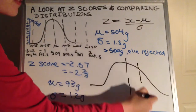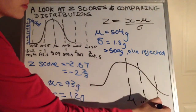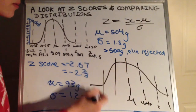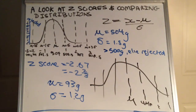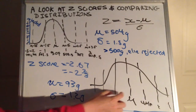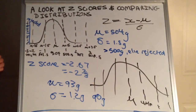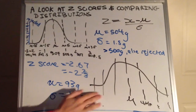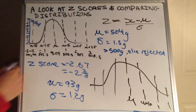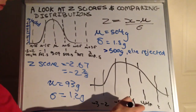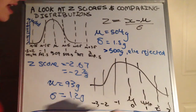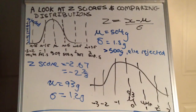We have a standard deviation here, so we have mu plus 1 standard deviation, mu plus 2 standard deviations, mu plus 3, and it's divided up like that. On the x-axis we'd have z-scores of negative 3, negative 2, negative 1, 0, 1, 2, and 3. Because the mean is 93 grams, we'd have 93 take 1.2 and so forth for the gram weights, which I'll fill in after we've done the z-score calculation.